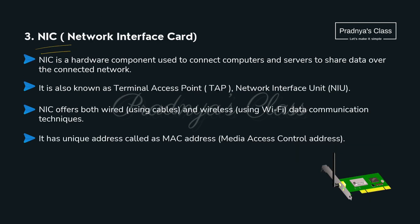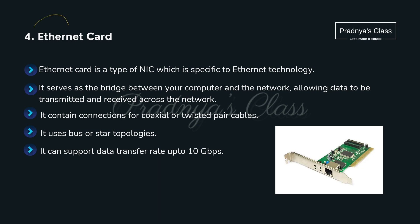The third is Network Interface Card, that is NIC. It has a unique address called MAC address. It is used to connect computers and servers so that we can share data over the network. Moving ahead, the next network device is ethernet card, which is a type of network interface card. For connection it uses coaxial or twisted pair cables. It serves as a bridge between the computer and the network, with a data transfer rate of up to 10 Gbps.